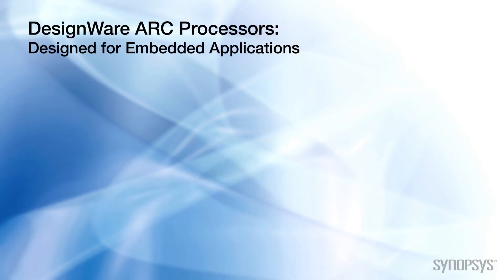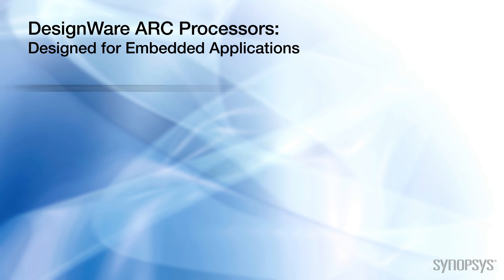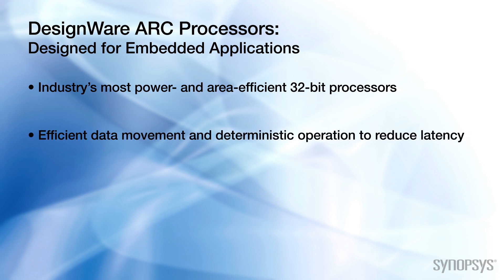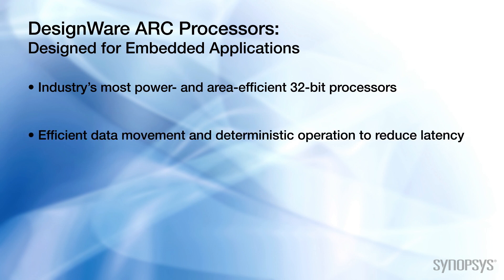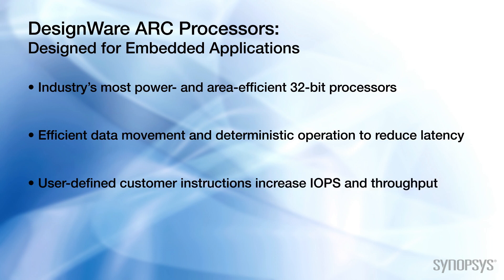Today, ARC processors are broadly used in flash devices and all of us use many of them every day. There are many reasons for this. ARC processors are designed for embedded applications, so they offer very high performance relative to their size and power consumption, as well as efficient data movement and deterministic operation. They also have support for user-defined custom instructions, which can be used to support higher throughput and IOPS.